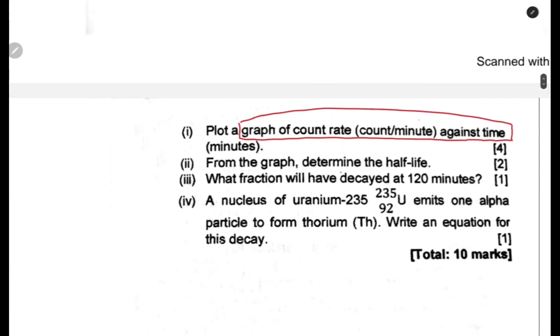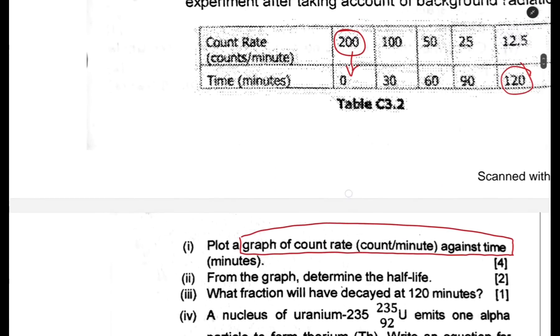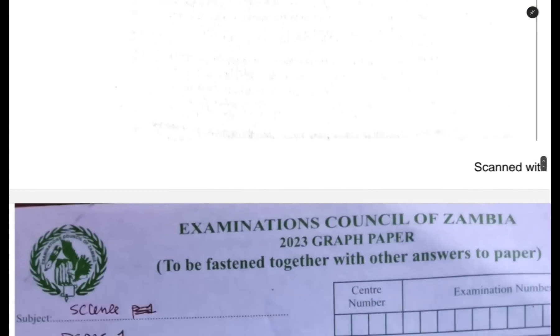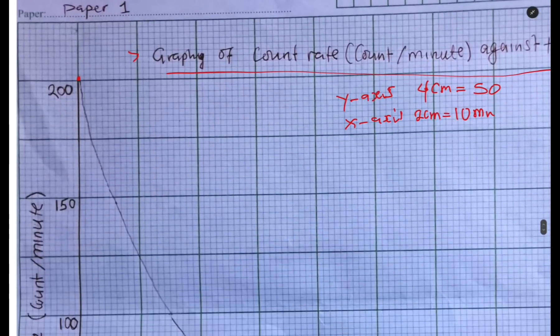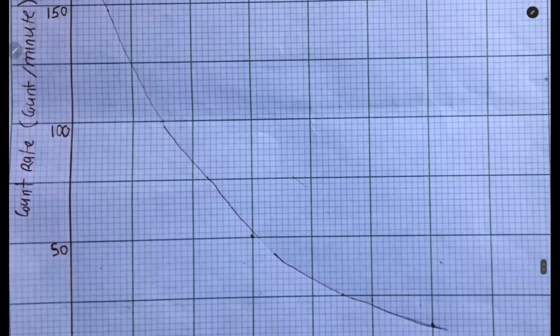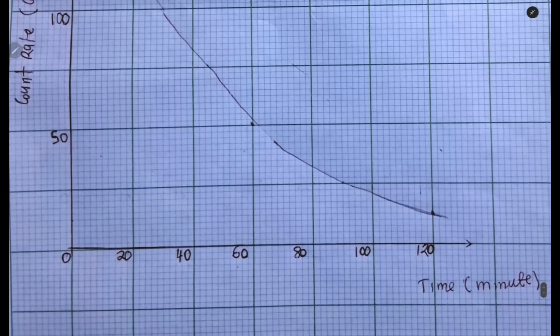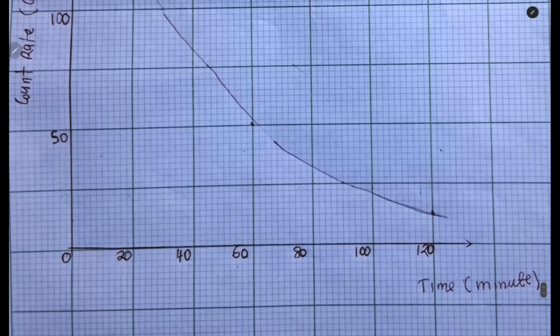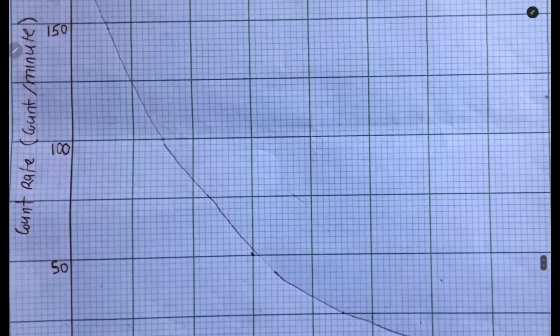The next one is 100 comma 30. You go on the graph - 100 is right here, comma 30. Where is 30? 30 is in between 20 and 40, pinning up to here.